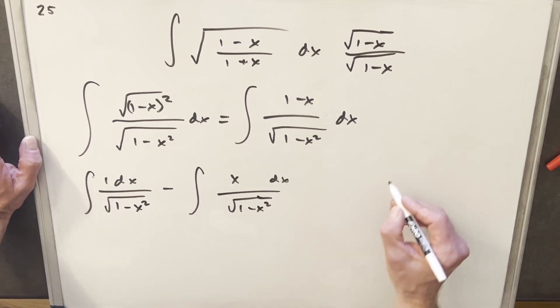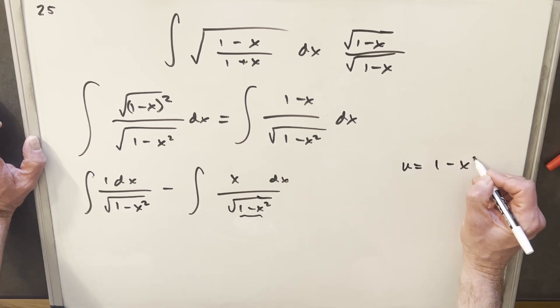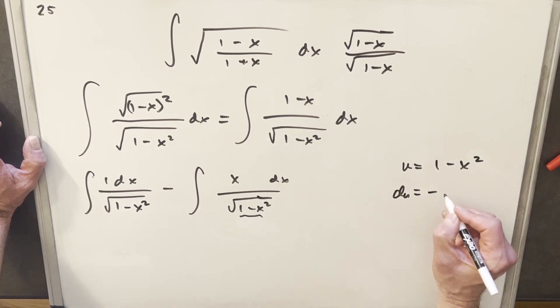And what I can do here is we'll do a u substitution. So I'm going to call my u this whole thing in the radical. So we'll say u is 1 minus x squared. Then taking our derivative, du is going to be minus 2x dx.